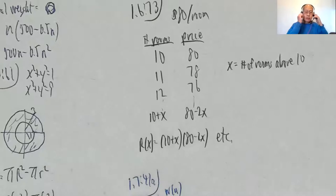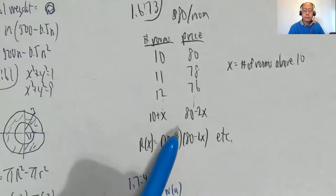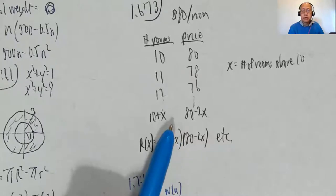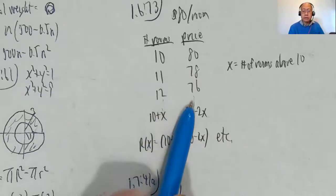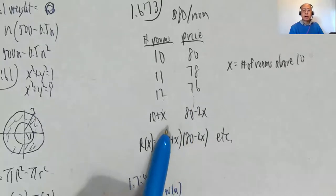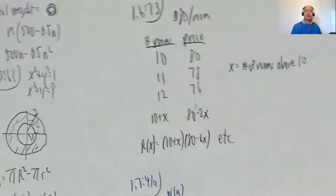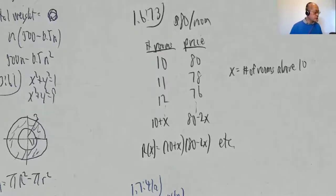14 rooms would knock off $8, so the price would be down to $72. Yeah, that pattern holds. So I wanted to do that problem, and now I want to go back and do some 1.7.